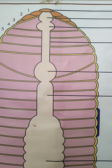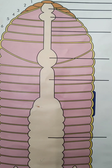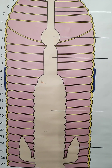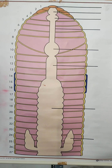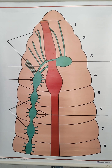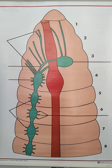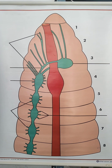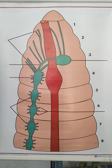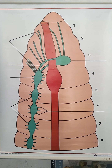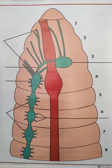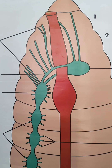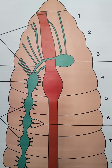This is the digestive system of earthworm. You need to draw a diagram with 2 to 4 labellings. Then this is the earthworm's nervous system. Identification is 1 mark, diagram is 3 marks, labeling is 2 marks — total 6 marks for the first part of the Zoology practical.